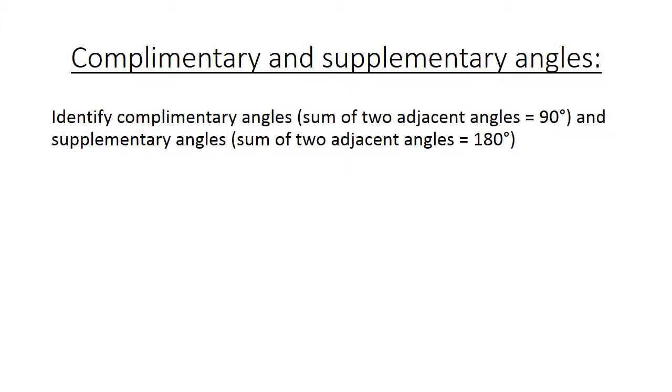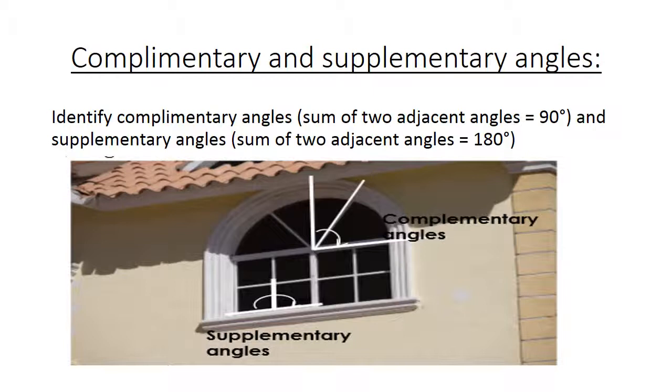Complementary and supplementary angles. Identify complementary angles: the sum of the adjacent angles which is equal to 90 degrees, and supplementary angles: the sum of the two adjacent angles equals 180 degrees. If we look at this picture, we can see the complementary angles on top and the supplementary angles at the bottom.